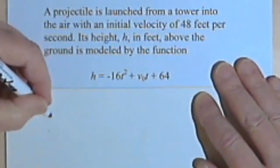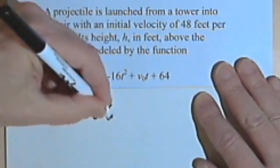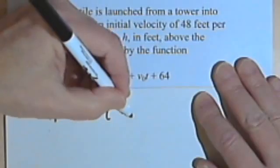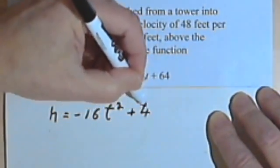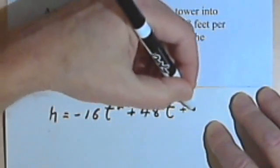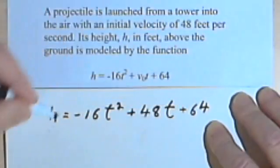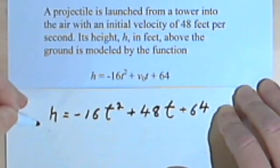So we're going to have h equals negative 16t squared plus, and instead of v sub o, I'll have 48t plus 64. And then the question asks us, the first one is, how long was it in the air? Well, it was in the air until it hit the ground. And when it hit the ground, its height was zero.